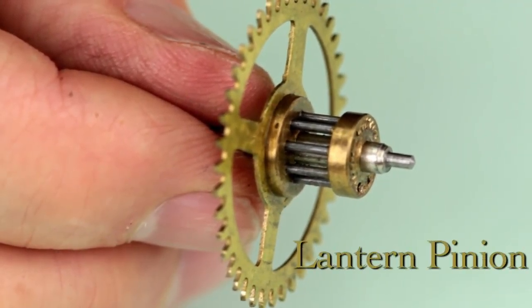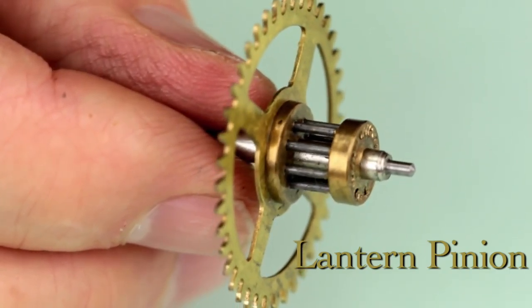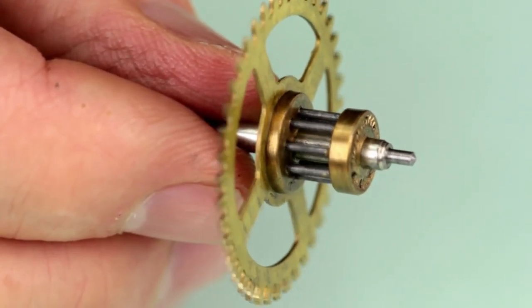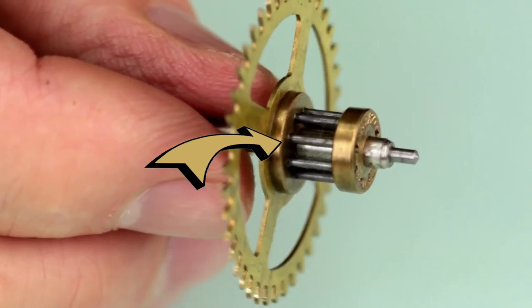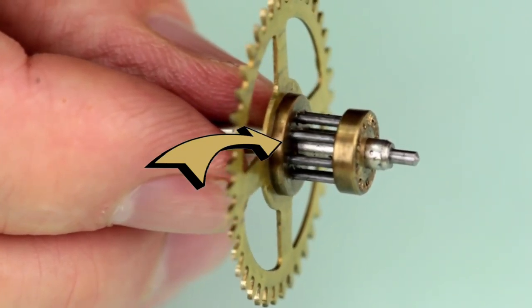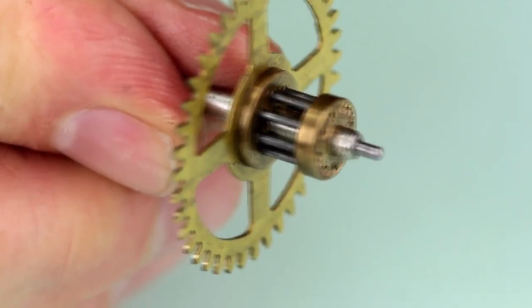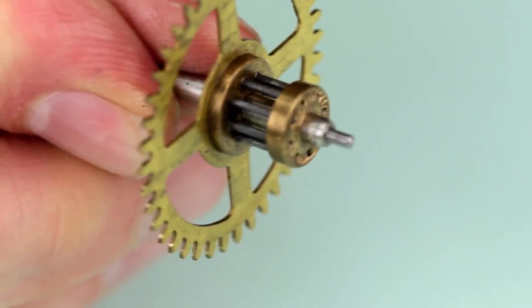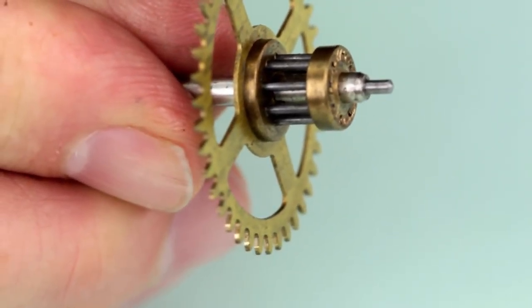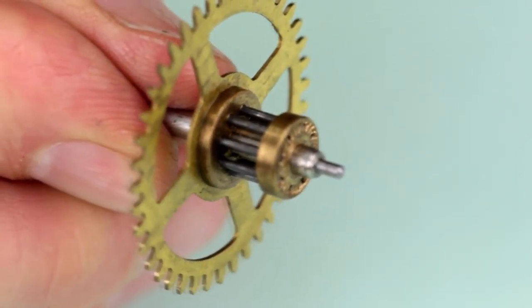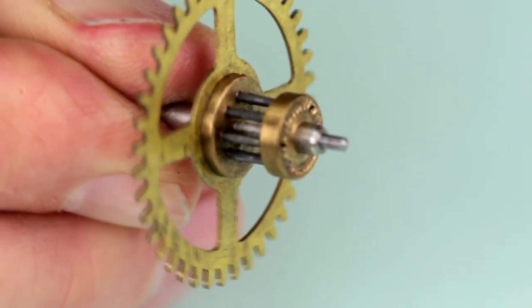This is a lantern pinion. These are common in most American kitchen and mantel clocks. Notice the hardened steel wires taking the place of the leaves. Lantern pinions are inexpensive to make, and they have less friction than a cut pinion of the same number of leaves. An 8-wire lantern pinion is equal to a 10-leaf cut pinion. They're easy to repair, too. Just replace the wires.